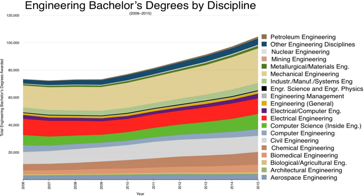In the UK, the term 'engineer' is applied to non-degree vocations such as technologists, technicians, draftsmen, machinists, mechanics, plumbers, electricians, repair people, and even semi-skilled or unskilled occupations. In recent developments by government and industry to address the growing skills deficit in many fields of UK engineering, there has been a strong emphasis on dealing with engineering in school and providing students with positive professional role models from a young age.